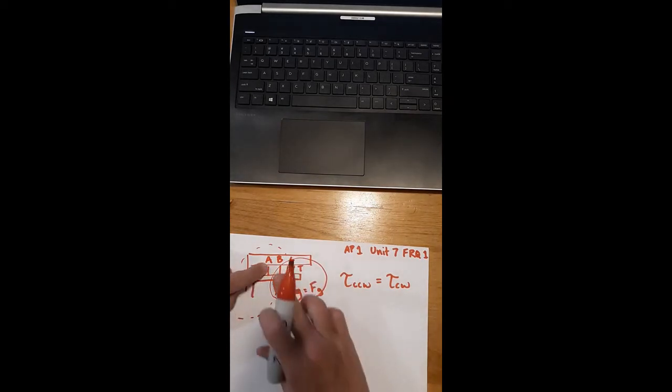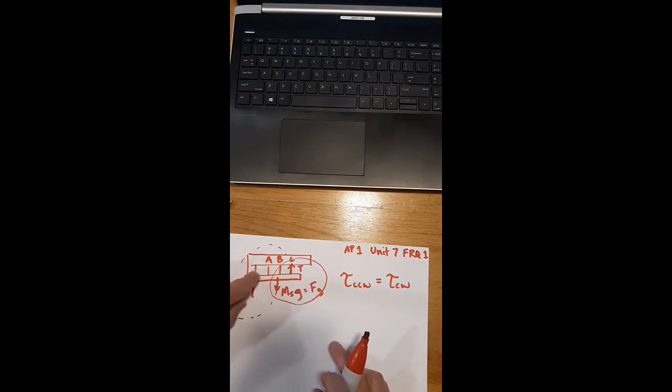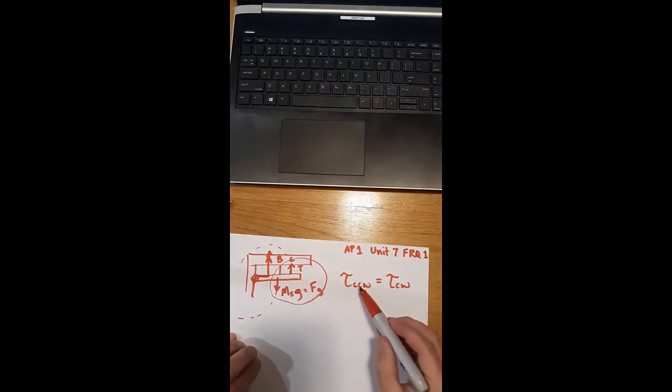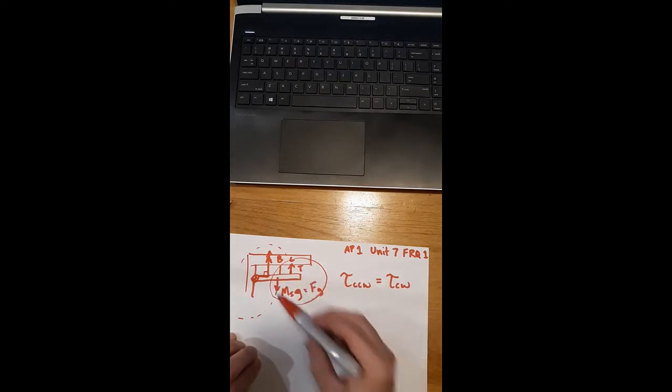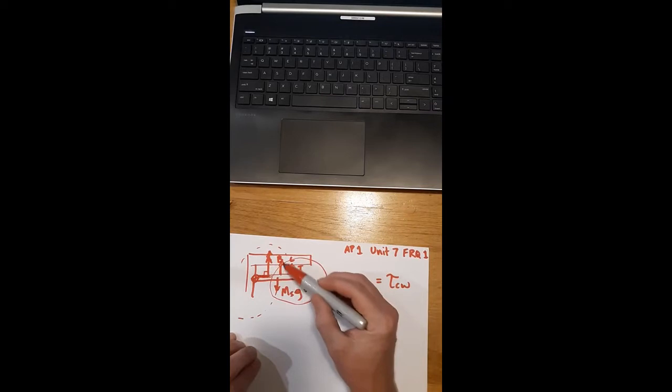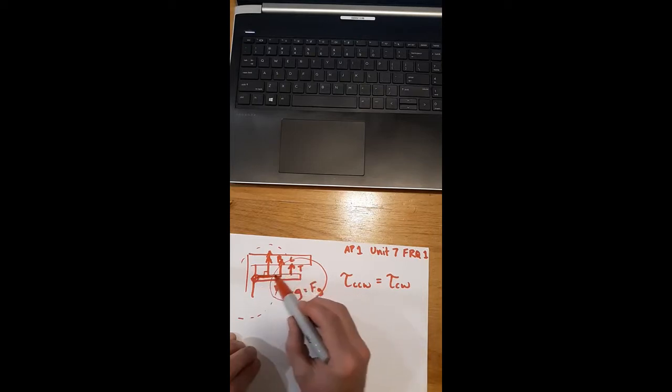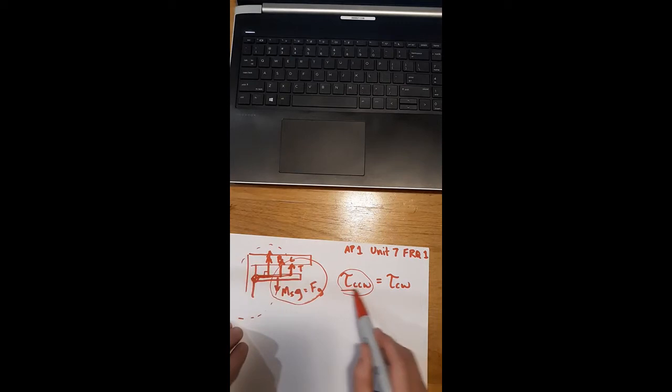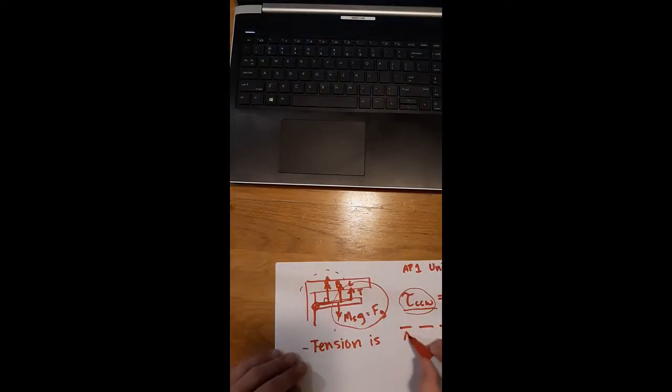If this is our pivot, this Mg would try to produce a clockwise torque, whereas this tension would try to produce a counterclockwise torque. As I am deciding which location has the greatest tension, A, B, or C, or do they all have the same, I need to think about this idea of equilibrium. If this string was what was supporting this arm, wouldn't that tension have to be a lot bigger because of that shorter lever arm? Remember what torque is. It's a force that is perpendicular to a lever arm. You'd have to have a much bigger tension because of that short little lever arm. Here at B, you'd have a slightly lesser tension because you have a longer lever arm. And C, you would have the least amount of tension because you have this really long lever arm.